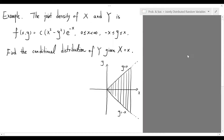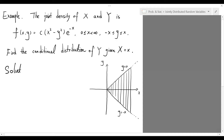Here is the third example. The joint density of X and Y is C times x squared minus y squared times e to the negative x, when x is between 0 and infinity and y is between negative x and x. Find the conditional distribution of Y given X equals x. Note that the non-zero region of this joint density function is illustrated by the shaded part in the figure. To find the conditional distribution, we will break the computation into three steps.